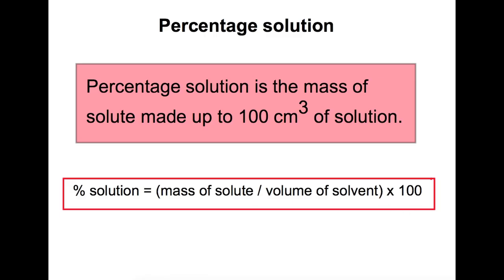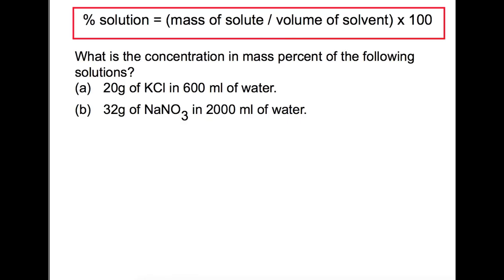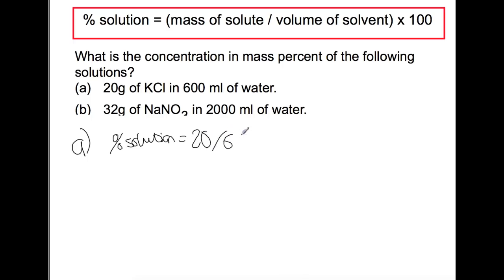Let's have a look at this being used for a calculation. We've got two questions. For part a, we are trying to work out the concentration in mass percent for each of these solutions. Writing out the equation: percentage solution equals the mass of solute divided by the volume of solvent, all times 100, giving a percentage solution of 3.3%.